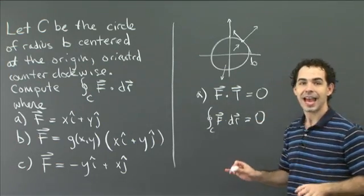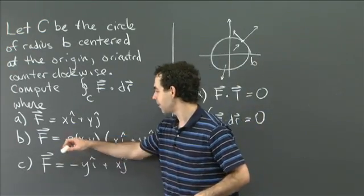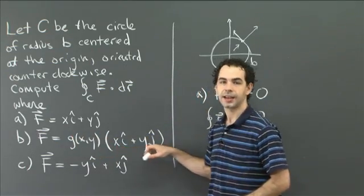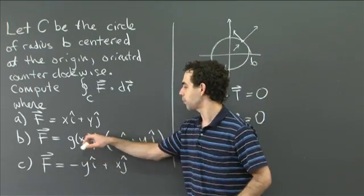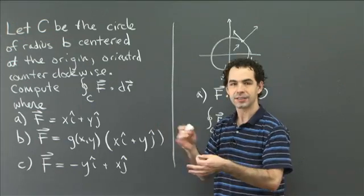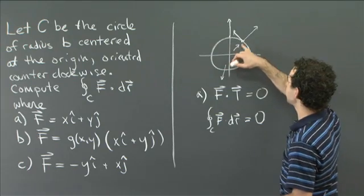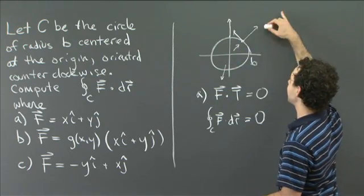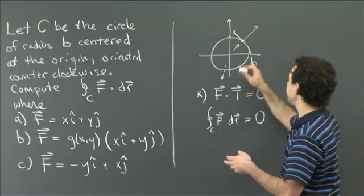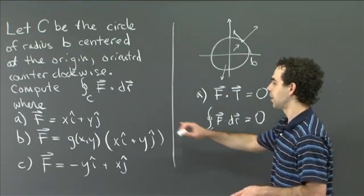Part b is actually exactly the same. Right? If we look back at our formula over here in part b, we have that f is given by some function g(x,y) times xi plus yj. Well, what is this g(x,y) doing? It's just rescaling. It's telling you at every point, you can scale that vector by some amount. So if we looked over at this picture, maybe over here, you would scale some of these vectors to be longer. And over here, they might be shorter. Or you might switch them to be negative. But you don't change the direction of any vector in the field from part a.